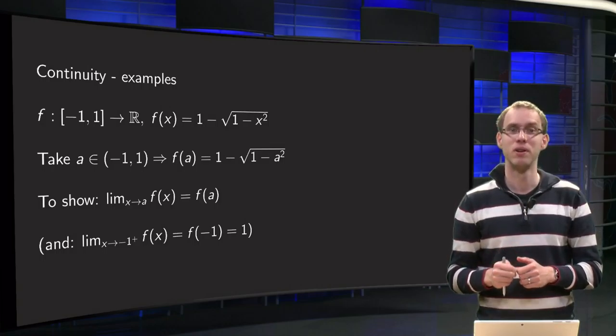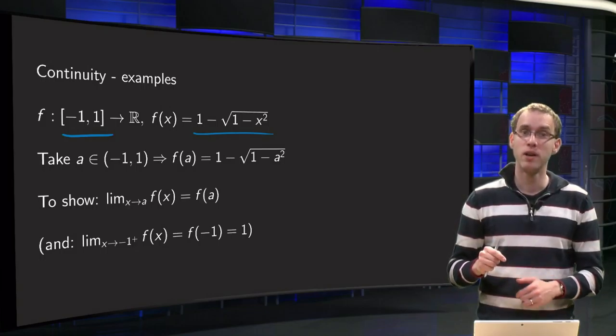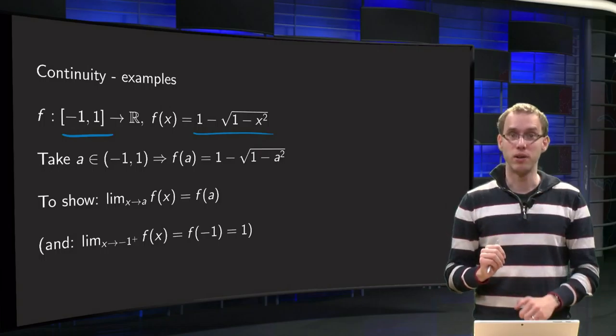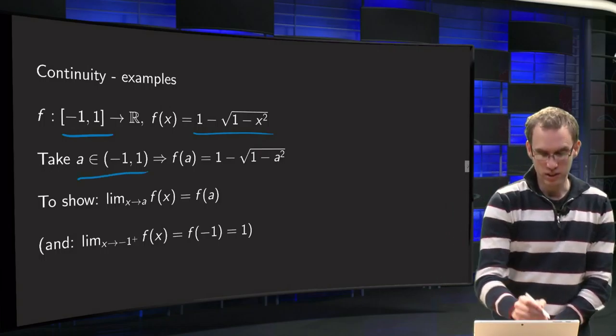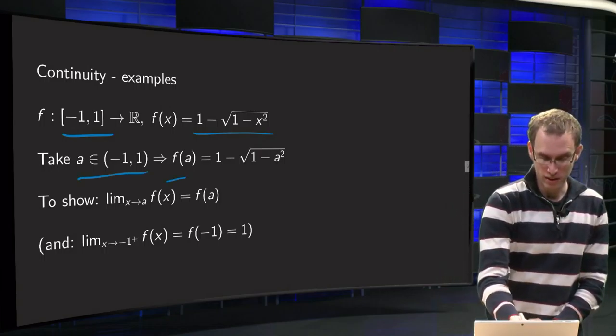So let us take a look. First, an example of the function domain closed: f of x equals 1 minus square root of 1 minus x squared, and then we want to show that this function is continuous.